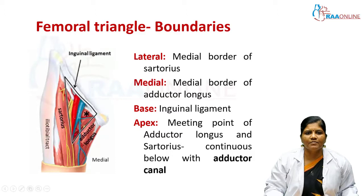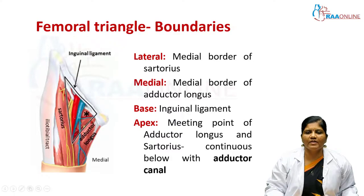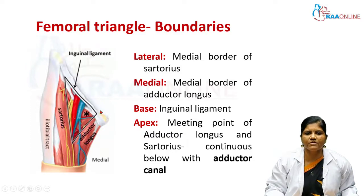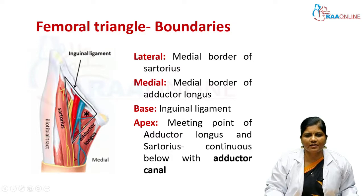The medial boundary is formed by the medial border of the adductor longus, a muscle of the medial compartment. The base is formed by the inguinal ligament, and the apex is formed by the meeting point of the sartorius muscle and the adductor longus muscle. This apex is continuous below with the adductor canal.